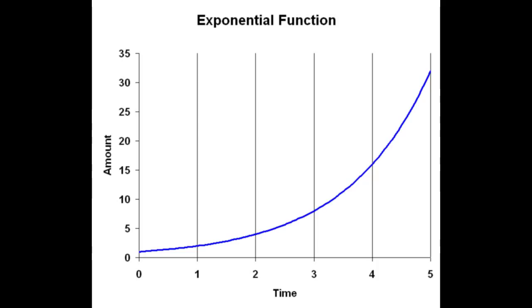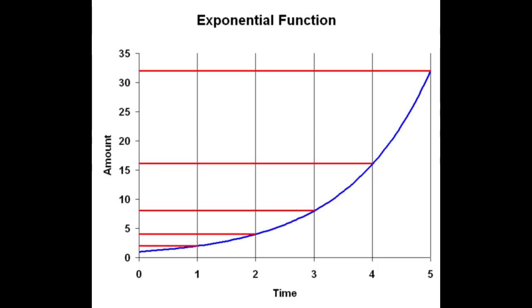I've scaled this time axis so that you have the values of 1, 2, 3, 4, 5 when the size axis goes to 2, 4, 8, 16, and 32. With different growth rates, you just change the numbers on the time axis — the curve will stay the same.